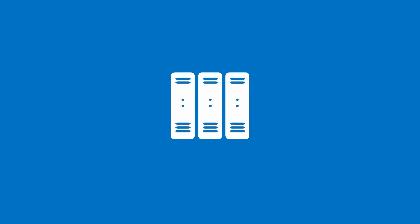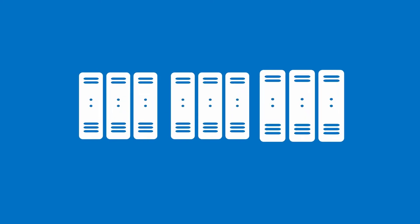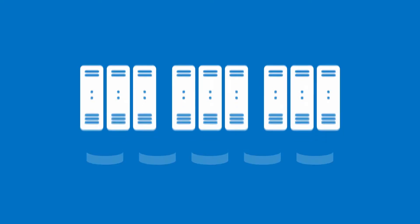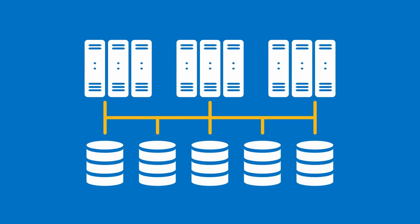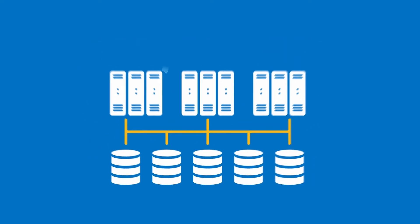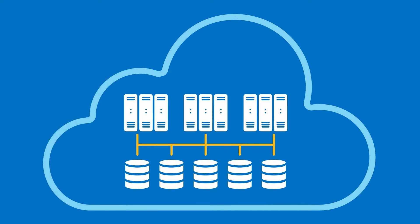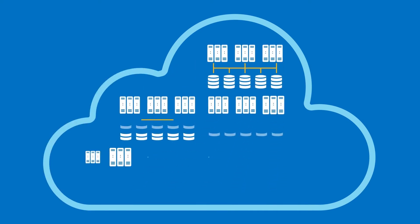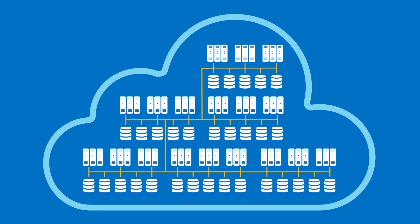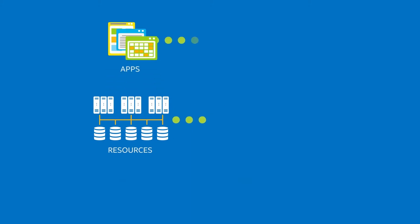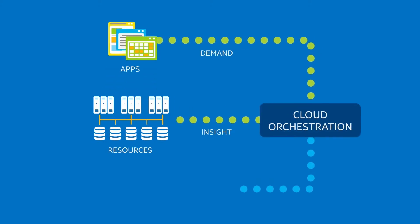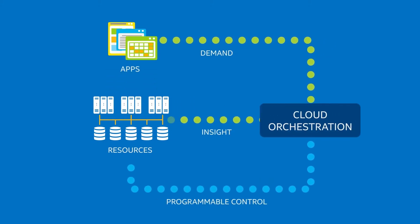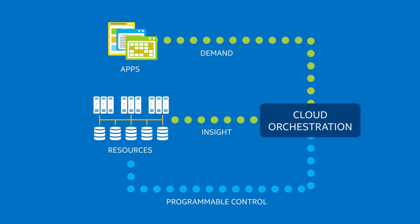Let's start with what a cloud is. All clouds are data centers, or multiple data centers, made up of compute and storage resources connected by a network. But what makes a data center a cloud is that all of those resources are virtualized into one big giant shared pool of resources, which can be intelligently and automatically orchestrated, adapting to meet the ever-changing needs of your apps and the ever-changing utilization and availability of each resource.